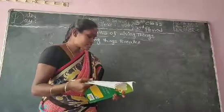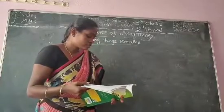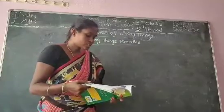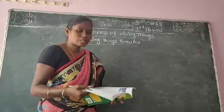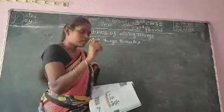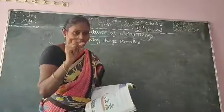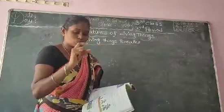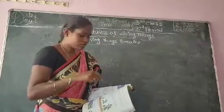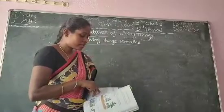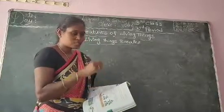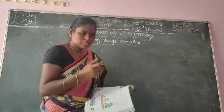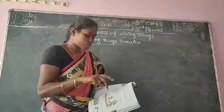From the tiniest insect to the largest animal, all living things breathe. Every creature — from the smallest insect to the largest animal — breathes. All living things can breathe.